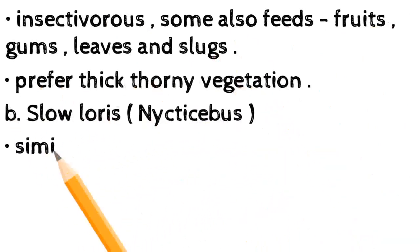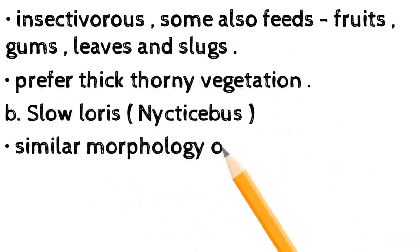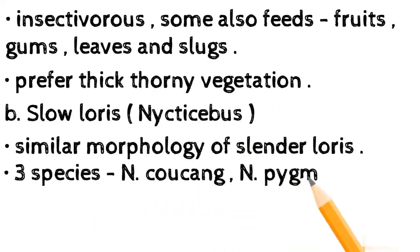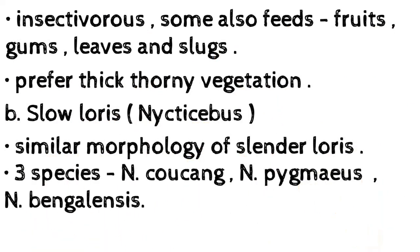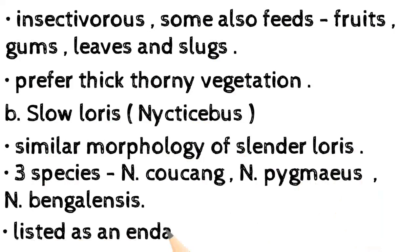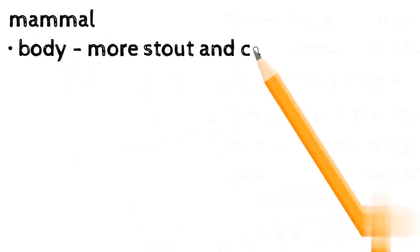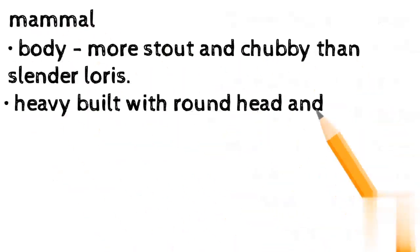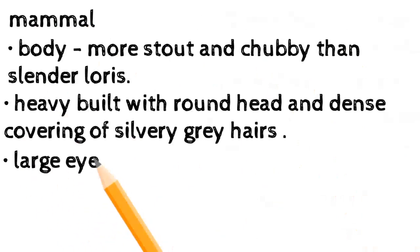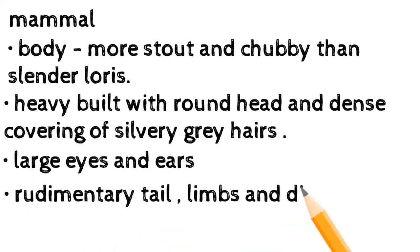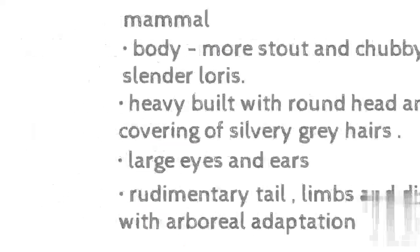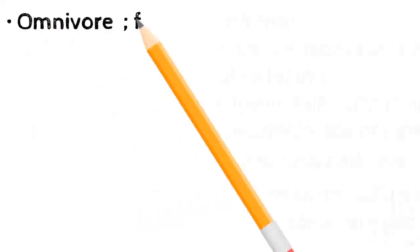Slow loris — Nycticebus — has similar morphology to the slender loris; three species: N. coucang, N. pygmaeus, N. bengalensis — listed as endangered. Body more stout and chubby than the slender loris; heavy-built with a round head and dense covering of silvery-gray hairs. Large eyes and ears; rudimentary tail. Limbs and digits with arboreal adaptation; omnivore — feeds on insects, fruits, and tender shoots.